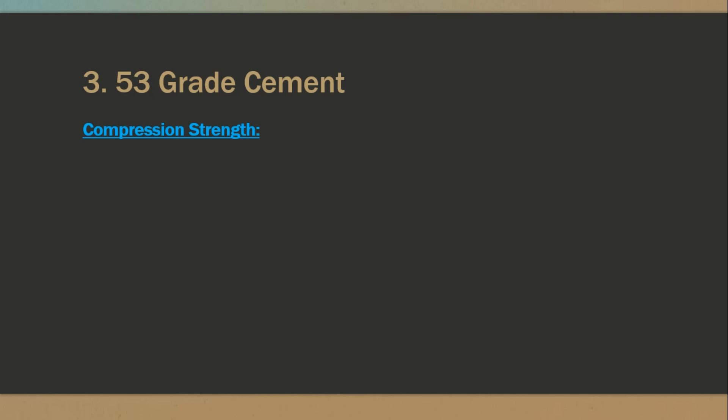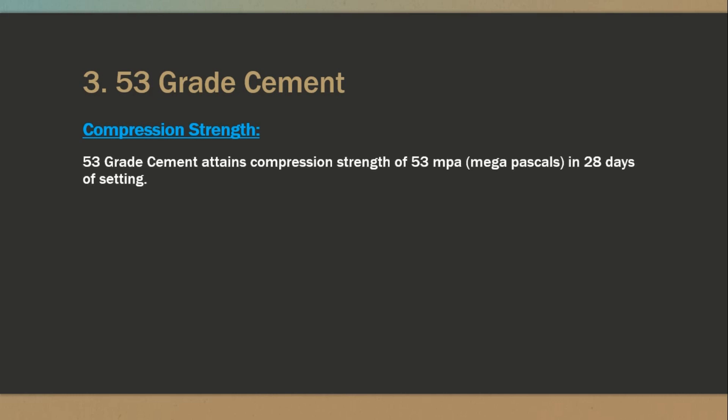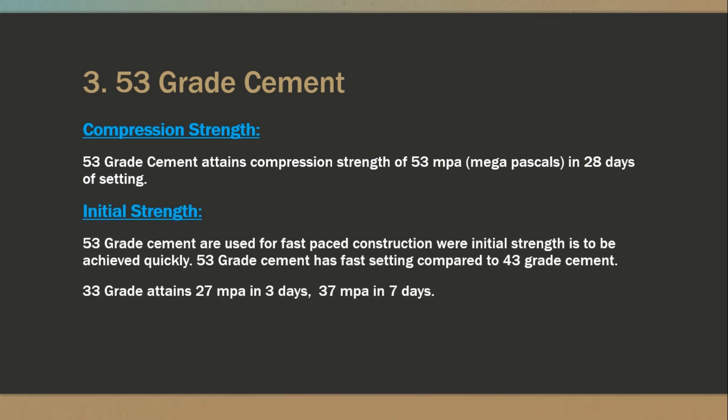The third type is 53 grade of cement. 53 grade cement attains a compressive strength of 53 MPa in 28 days. It should attain 27 MPa in 3 days and 37 MPa in 7 days.